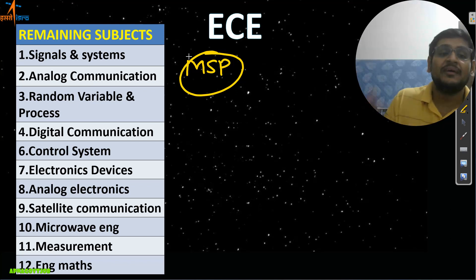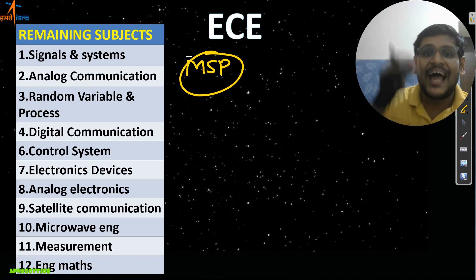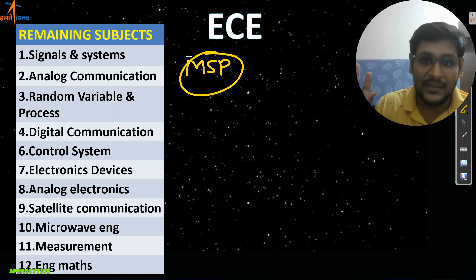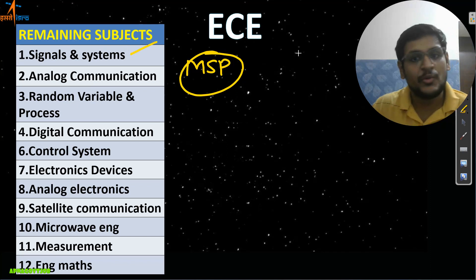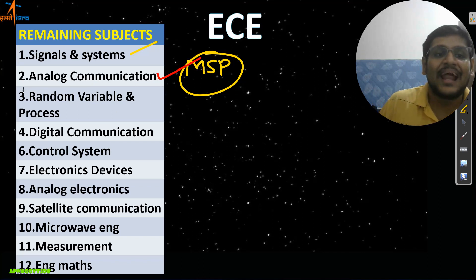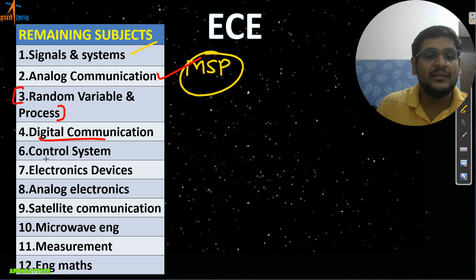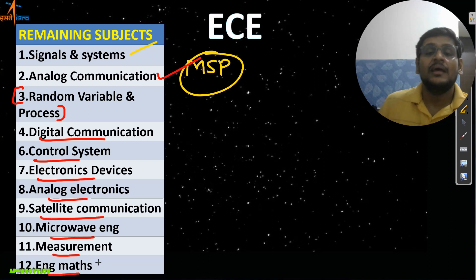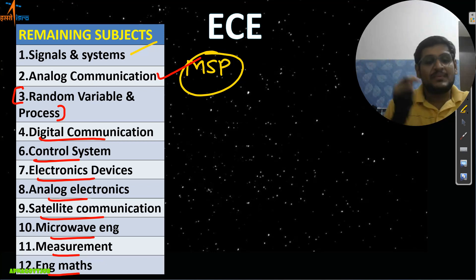The other subjects you need to cover for Electronics — follow this sequence only. First, complete Signals and Systems; second, Analog Communication; then Random Variables and Processes; then Data Communication; then Control Systems; Electronic Devices; Analog Electronics; Satcom; Microwave; Measurement; and Engineering Mathematics. Add these subjects to your Phase One subjects — this covers the whole ISRO syllabus.